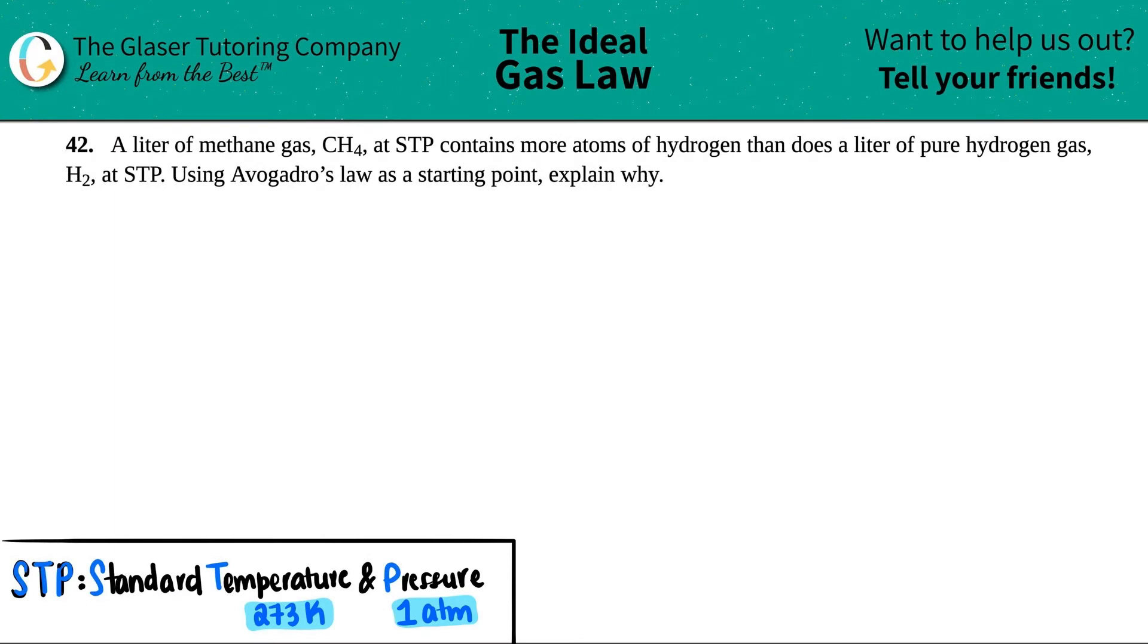Number 42. A liter of methane gas, which is CH4, at STP contains more atoms of hydrogen than does a liter of pure hydrogen gas, which is H2, at STP. Using Avogadro's law as a starting point, explain why.